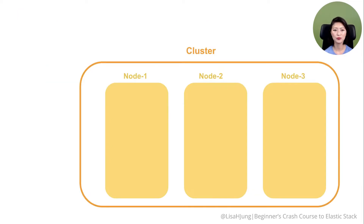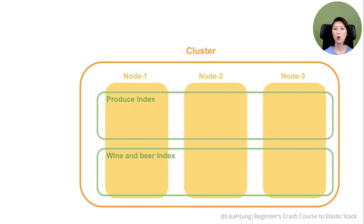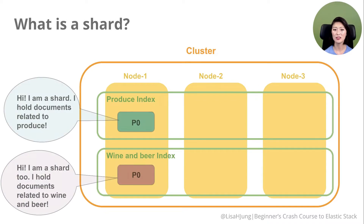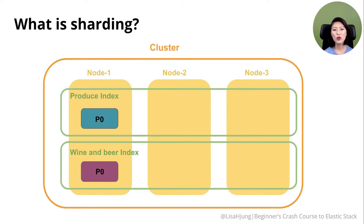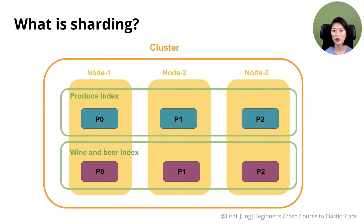Let's delve into this a little bit more. Here we have a cluster of nodes, a produce index, and a wine and beer index. The index is not actually storing documents — it's just a virtual thing that keeps track of where documents are stored. You can't find an index on disk. What actually exists on disk is a shard. A shard is where data is stored and where you run a search. When you create an index, one shard comes with it by default. You could also configure it to create an index with multiple shards distributed across nodes — this is a practice called sharding, and there are a lot of superpowers that come with it.